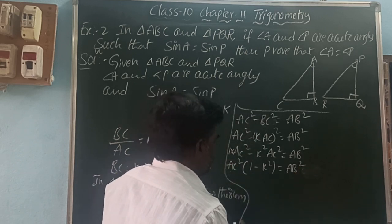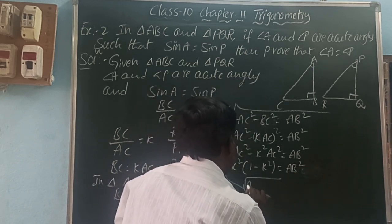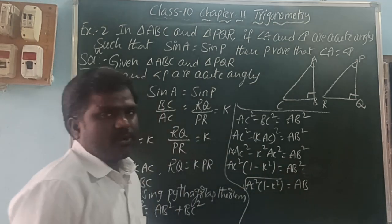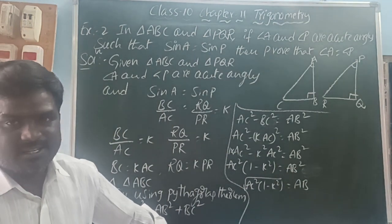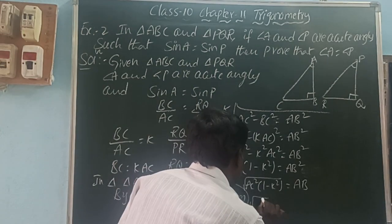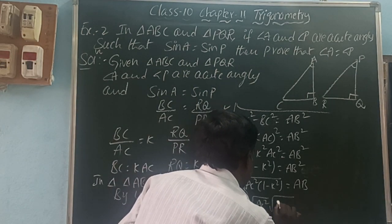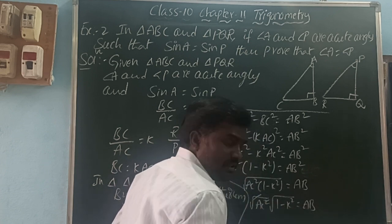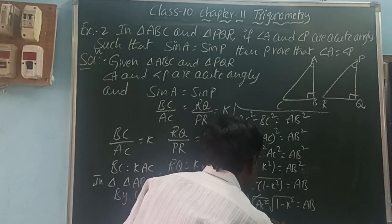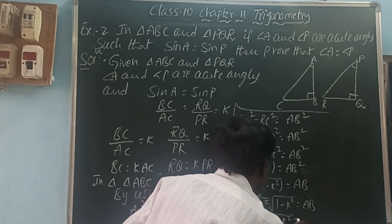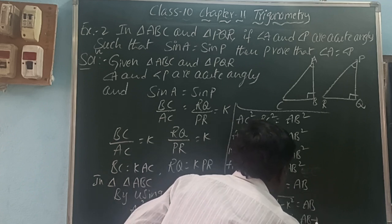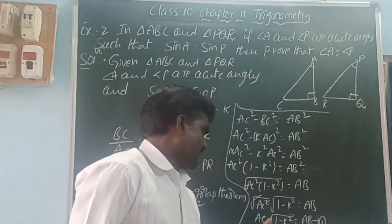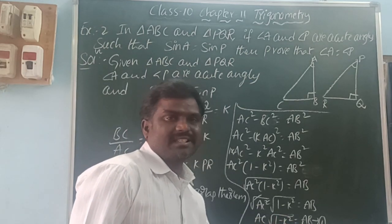Taking the square root of both sides: square root of AC²(1 minus k²) equals AB. Using the property that square root of A·B equals square root A times square root B: square root of AC² times square root of (1 minus k²) equals AB. The square and square root cancel, giving AC times square root of (1 minus k²) equals AB. So AB equals AC·√(1 − k²).